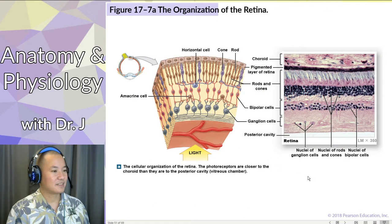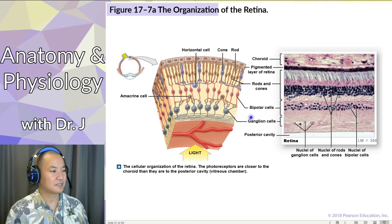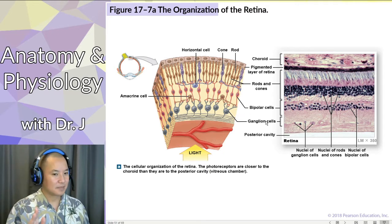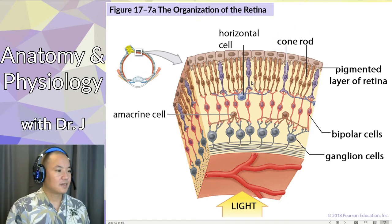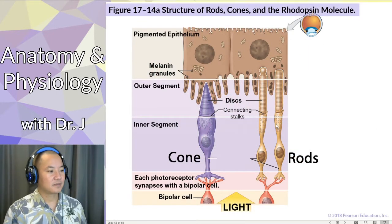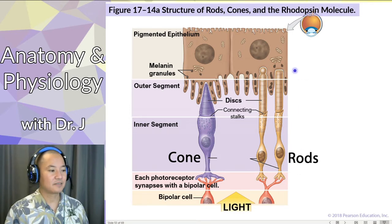What we have here is the retina. It's a layer of cells, and notice that it has all these types of cells. There are many types of cells, but the ones to focus on are cones and rods. Cones and rods are special types of neurons — these are photoreceptors, cells that detect light.